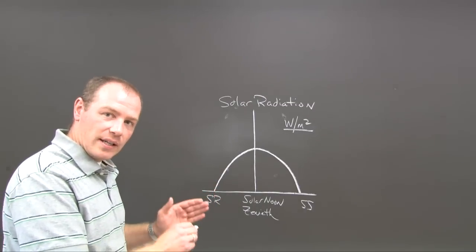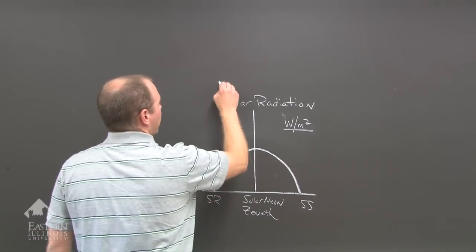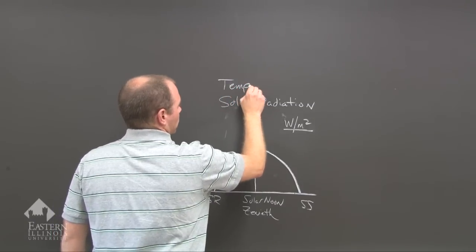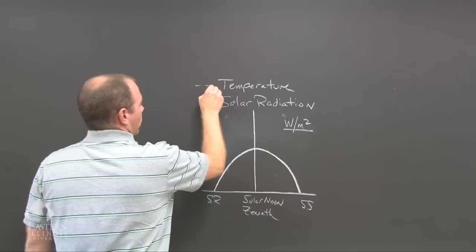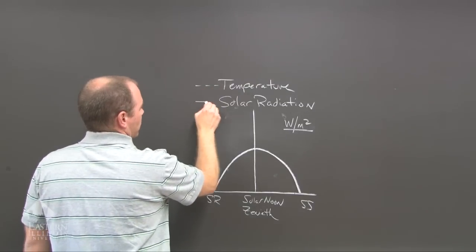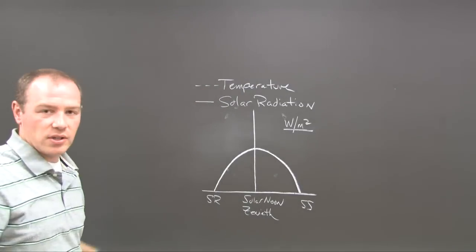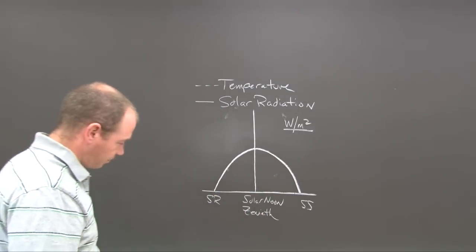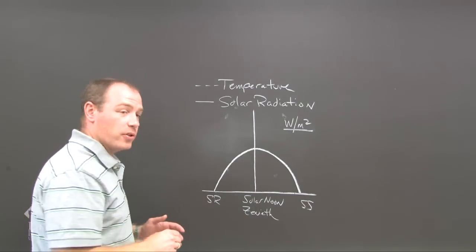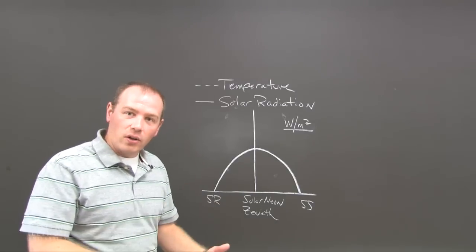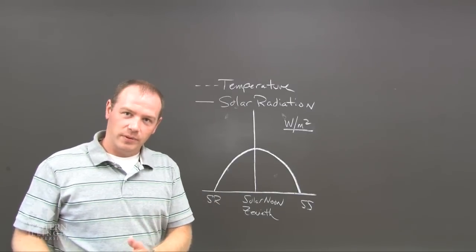So this is what's happening with the solar radiation. Now, let's look and see what happens when we add the temperature. We're going to put a dashed line for the temperature, solar radiation will be a solid line as indicated here. As the sun rises, the temperature is a result of the radiation.